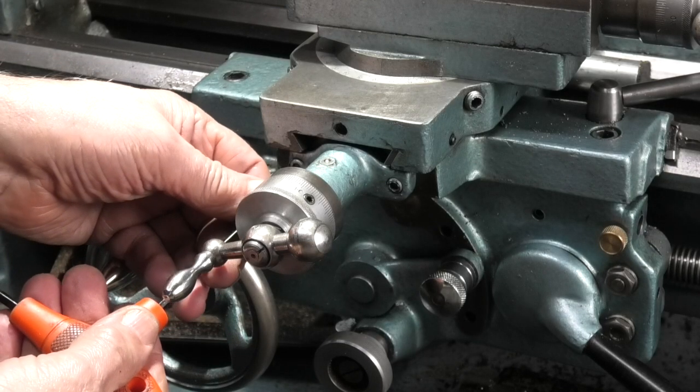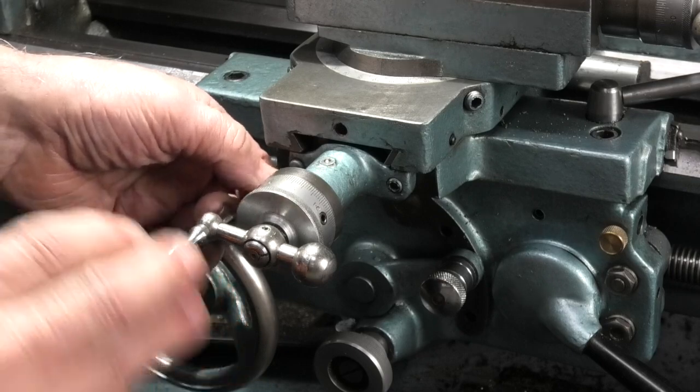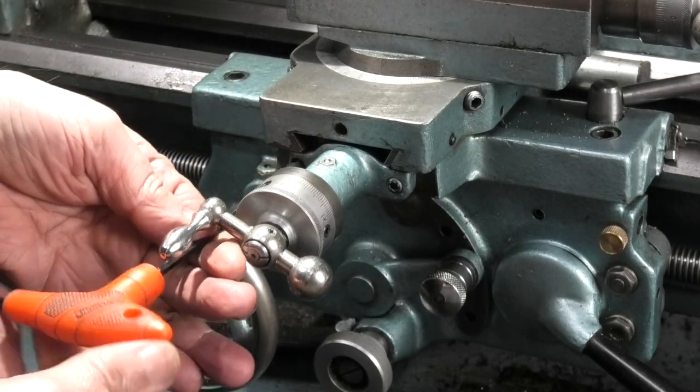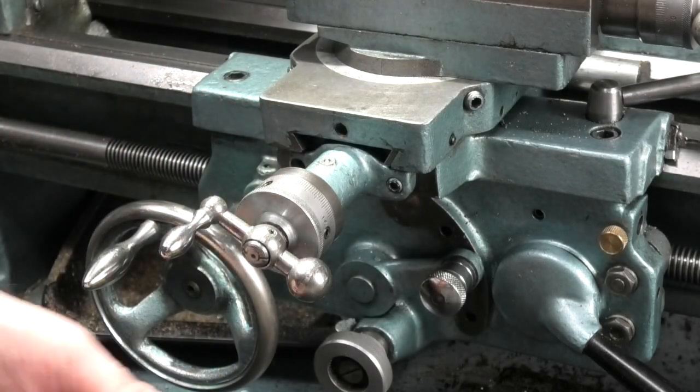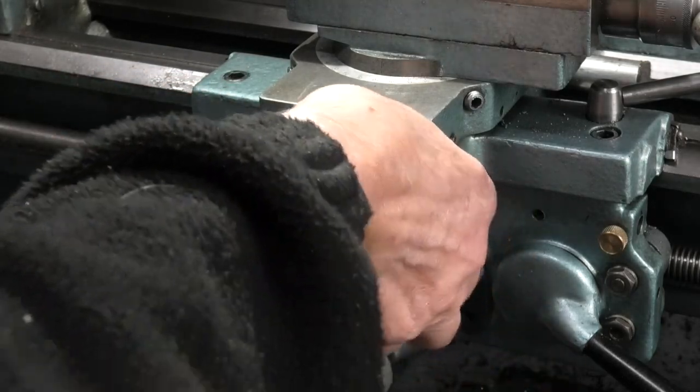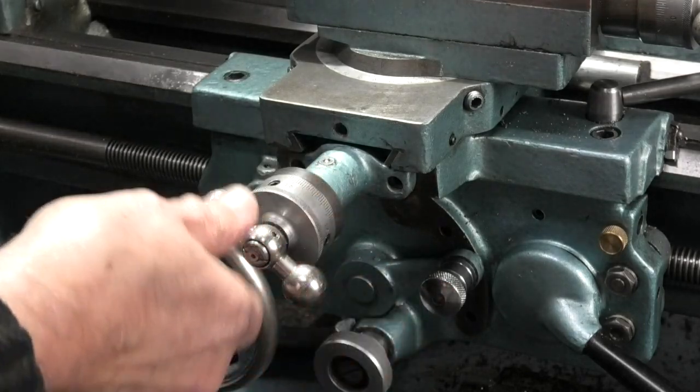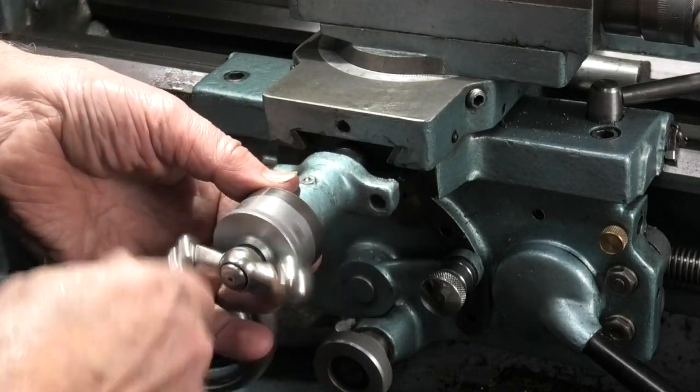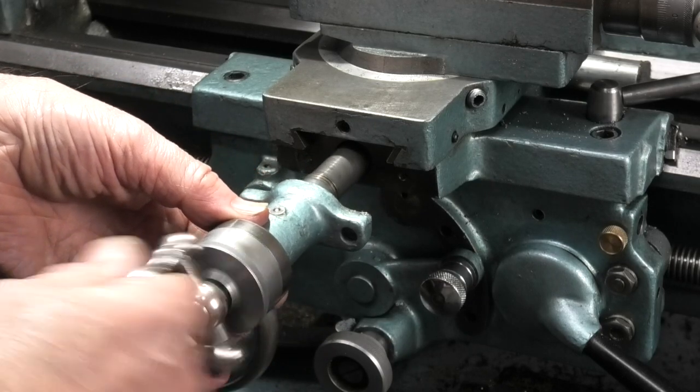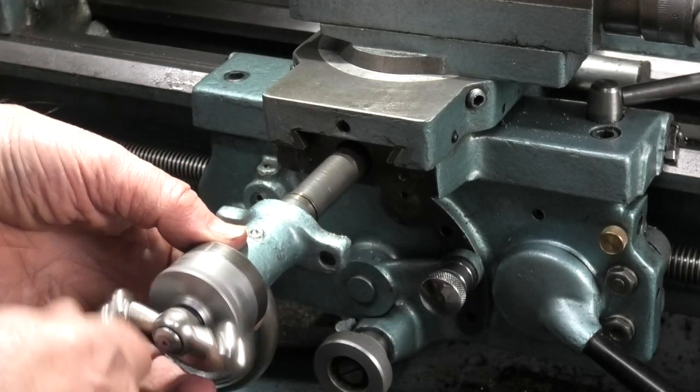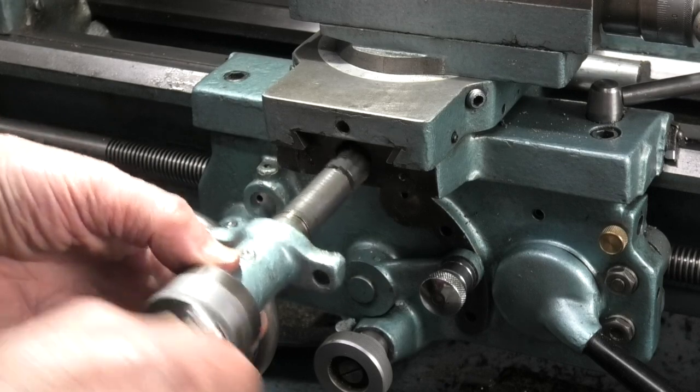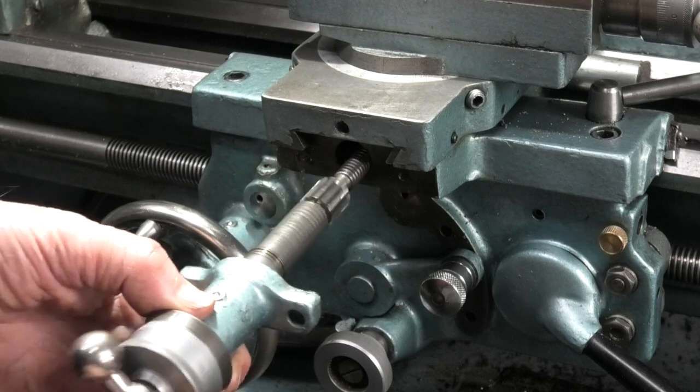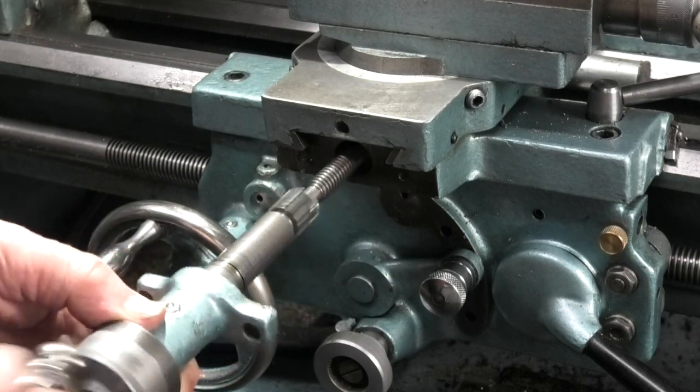To remove the cross slide screw, just undo two cap heads that are at the end. The other one on this side. And you should be able to unwind the screw. What I'm doing is unwinding it off the nut inside. And this is a left hand thread.